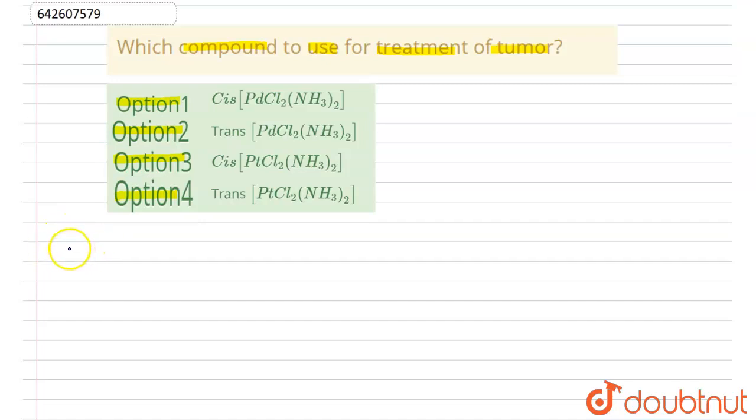Now the compound which is used for the treatment of tumor, the IUPAC name of the compound is Diamine Dichloroplatinum 2. This is the IUPAC name of the compound which is used for treatment of tumor.